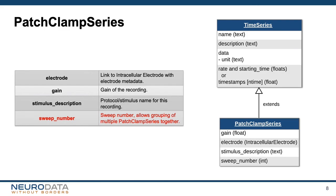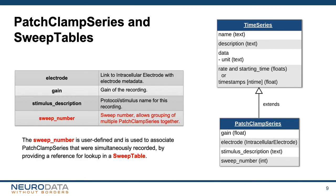Patch clamp series is the base class for all stimulus and response traces in intracellular recording sessions. In addition to basic time series information, patch clamp series includes a reference to an intracellular electrode that was used to do the recording, fields for signal gain, and a description of any stimulus applied. In addition, patch clamp series have a field for a sweep number that is used to associate patch clamp series that are recorded simultaneously.